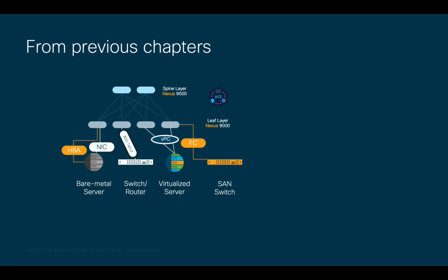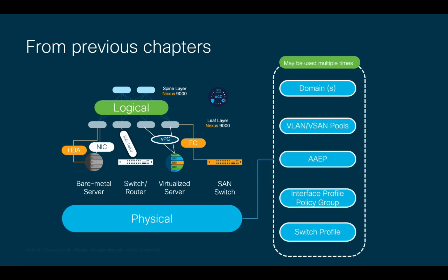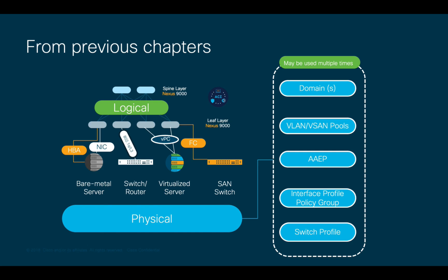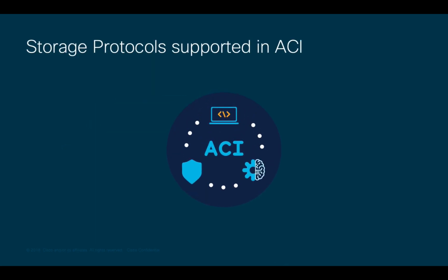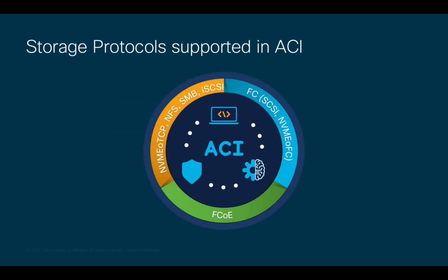In previous chapters we talked about how ACI requires a logical and physical network configuration to provide endpoint connectivity across the fabric, and that we may reuse the same objects such as AEPs, domains and VLAN pools for multiple connections. We have mainly focused on LAN connections so far, but what about storage protocols? Are they supported on ACI? And the answer is absolutely.